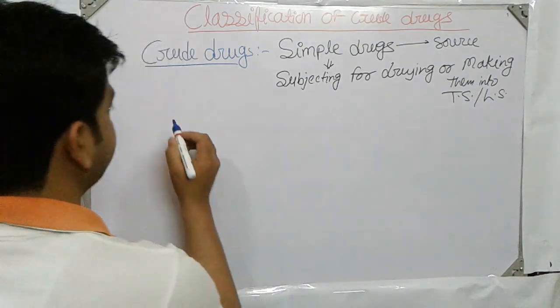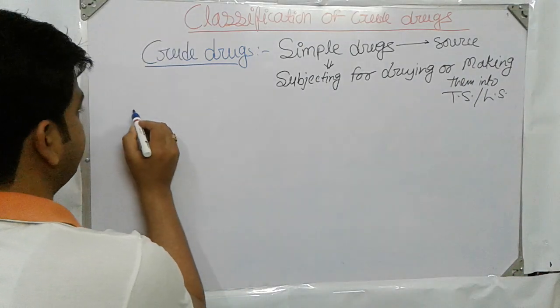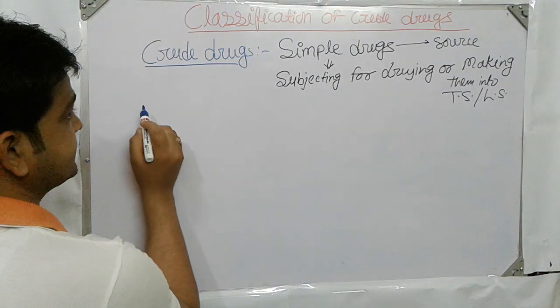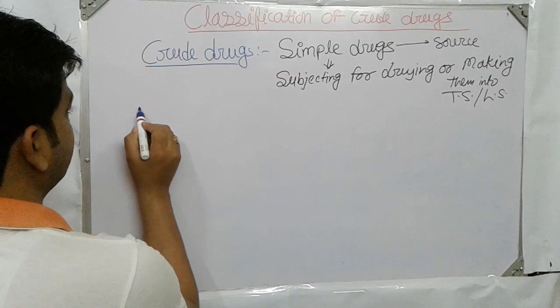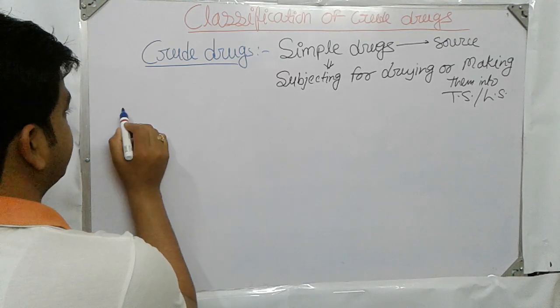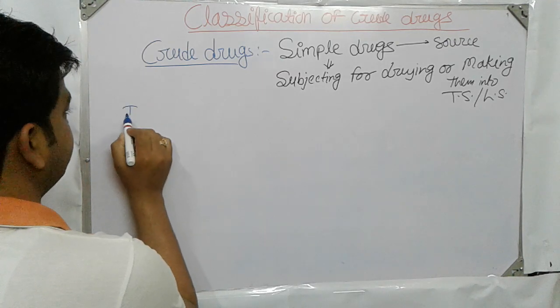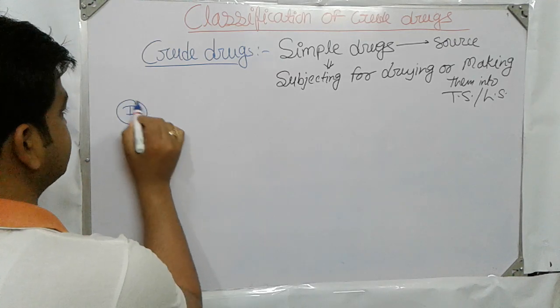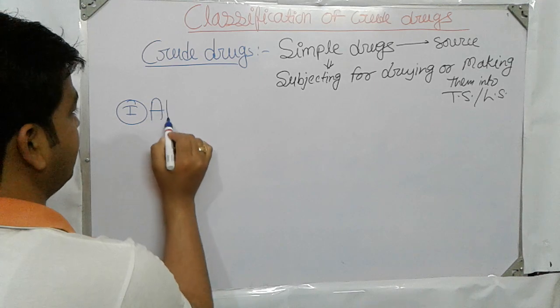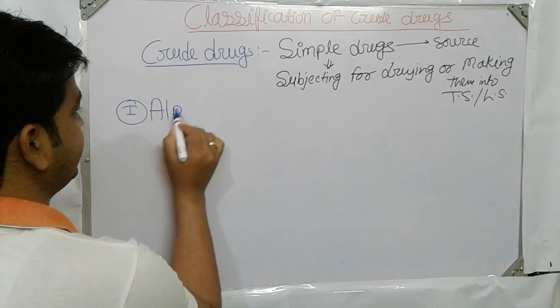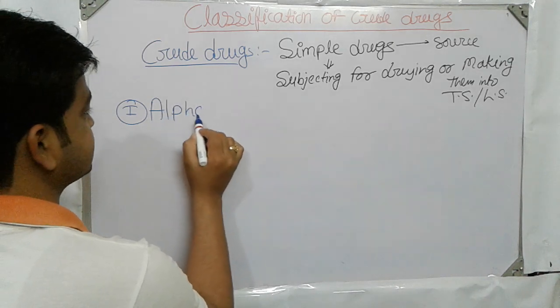When we are talking about the classification of crude drugs, the first type is called alphabetical classification.